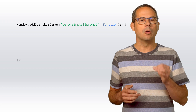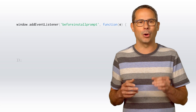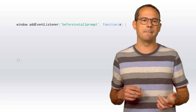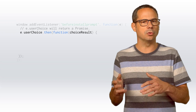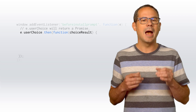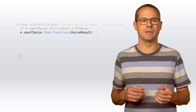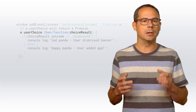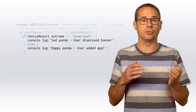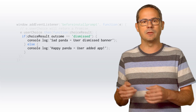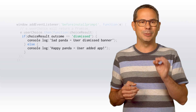Starting in Chrome 44, Chrome fires a beforeinstallprompt event before the app banner is shown. This event includes a promise named userChoice that is fulfilled after the user has responded to the banner. The fulfilled promise includes an outcome property that you can use to determine if the user dismissed or accepted the banner and added your app to their home screen. This is a great tool for understanding how your users interact with the app install banner.